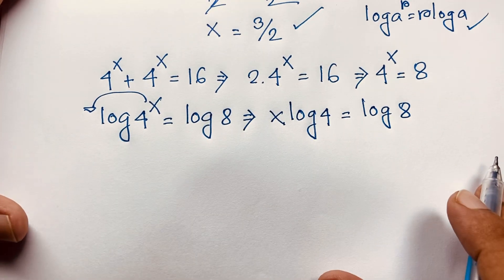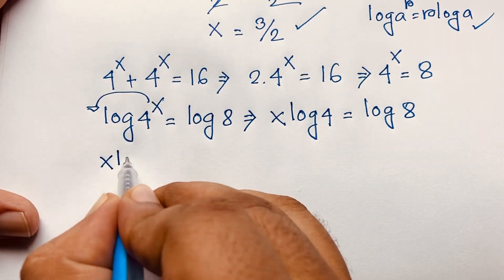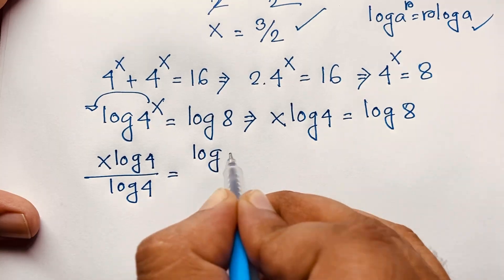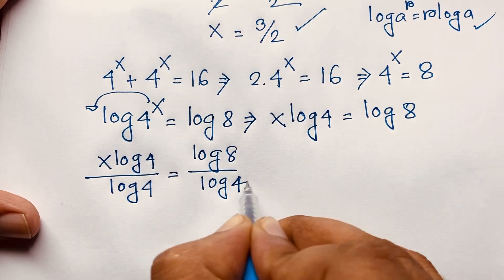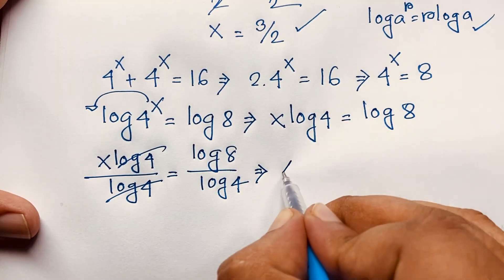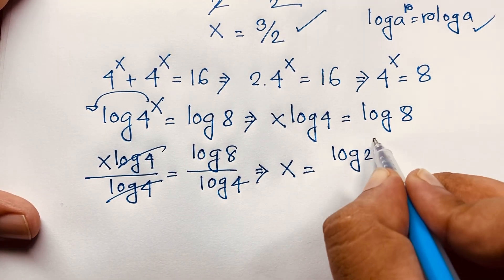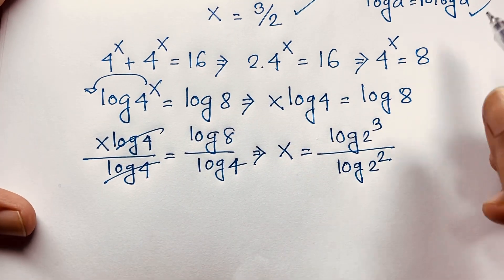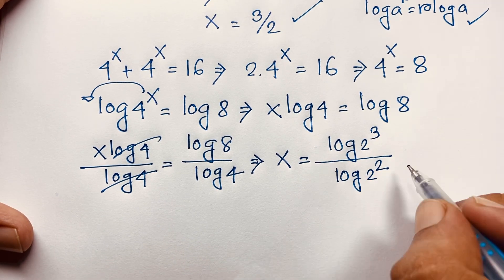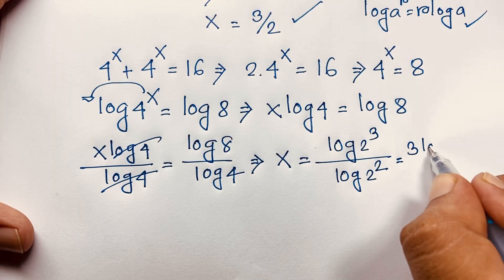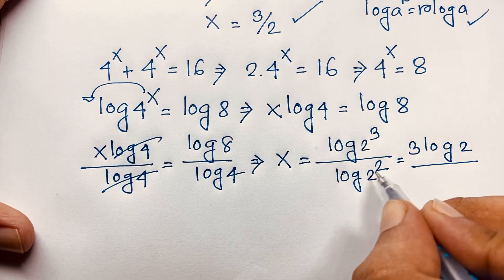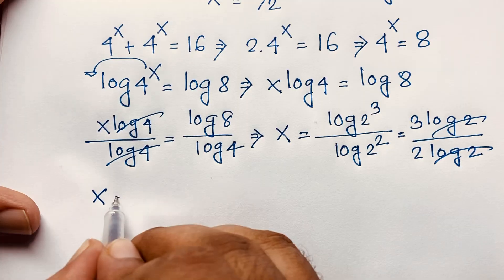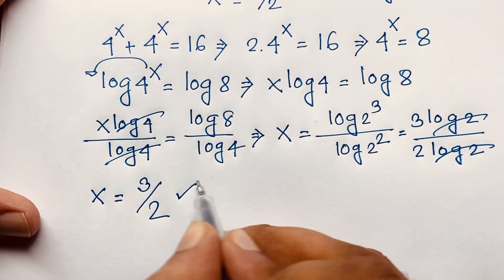This gives x times log 4 is equal to log 8. Dividing both sides by log 4, the log 4 cancels and we get x is equal to log 8 over log 4. Since 8 is 2 to the power 3 and 4 is 2 to the power 2, applying the log power rule gives 3 log 2 over 2 log 2. The log 2 terms cancel and we find x is equal to 3 over 2.